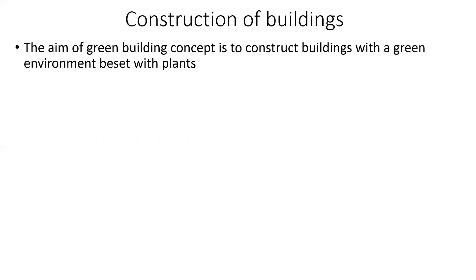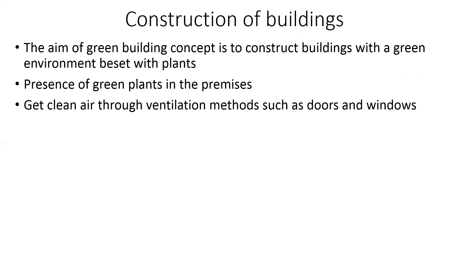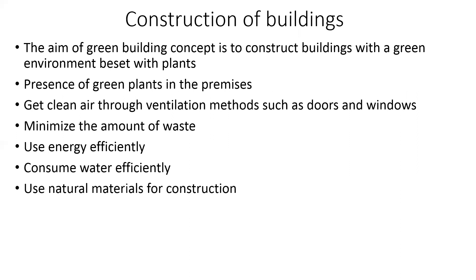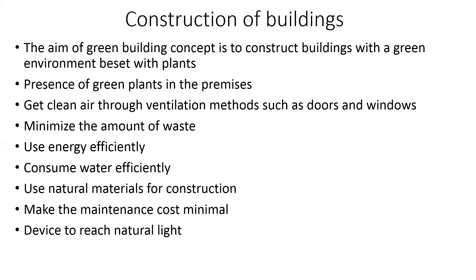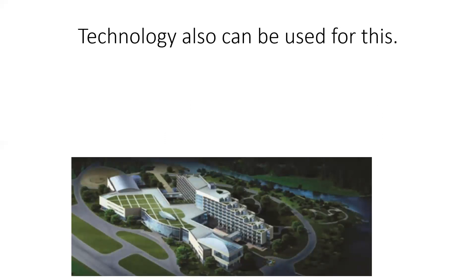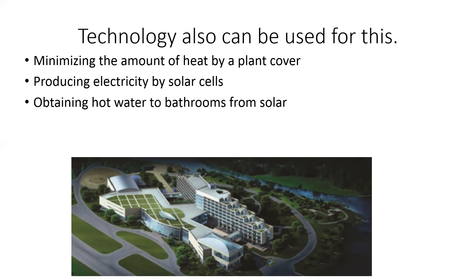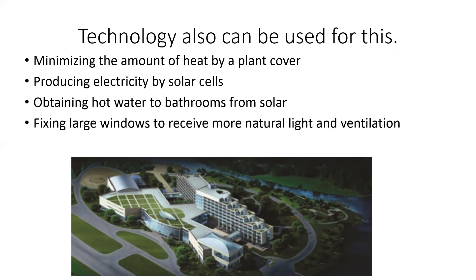The aim of the green building concept is to construct buildings with a green environment and plant cover. This includes presence of clean plants in the premises, clean air through ventilation via doors and windows, minimizing waste, using energy efficiently, consuming water efficiently, using natural materials for construction, making maintenance cost minimal, and allowing natural light. Technology can also be used: minimizing heat by plant cover, producing electricity by solar cells, obtaining hot water from solar water heaters, and fixing large windows to receive more natural light and ventilation.